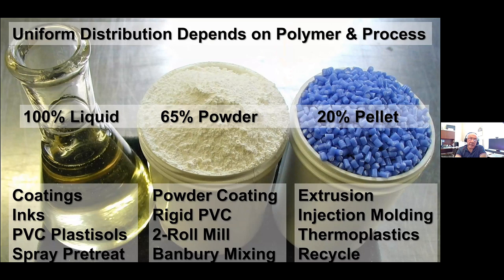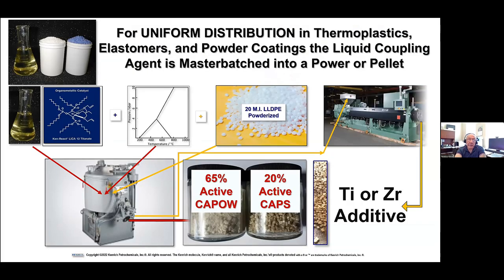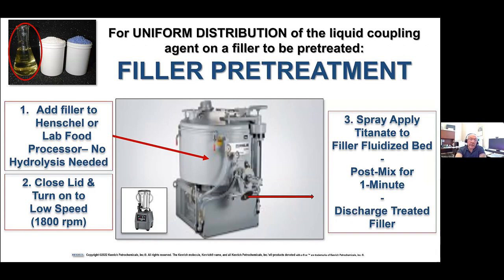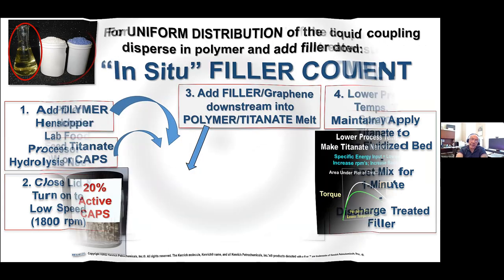We offer these materials as 100% liquid, 65% powders, and 20% pellets, depending upon your process — because it's critical to get the coupling agent into the polymer phase uniformly before it meets the interface. We've had experience making these additives in Henschels and extruders to make pellets, and they're available. When you're doing a Henschel treatment: add the filler — no hydrolysis needed — close the lid, turn it on to low speed, add the titanate to the fluidized bed of material, post-mix for a minute, and it's done. No water, no pH adjustment, no anything.